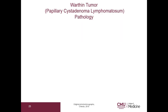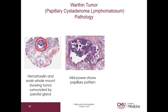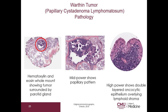Let's take a look at the pathology. Here is our tumor — you can see it is surrounded by normal parotid gland. At mid-power you can see the papillary pattern. Here on the right you can see the double-layered oncocytic epithelium overlying the lymphoid stroma, and here of course are the lymphocytes.